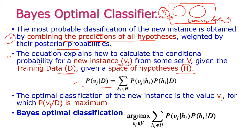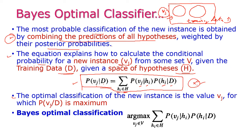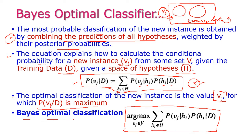P(vj | D) — that is, with respect to D we need to classify vj — is equal to the summation over all hi in capital H of P(vj | hi) times P(hi | D). This is the equation. The optimal classification is the value vj for which P(vj | D) is maximum — that is, the argmax over vj belonging to V.